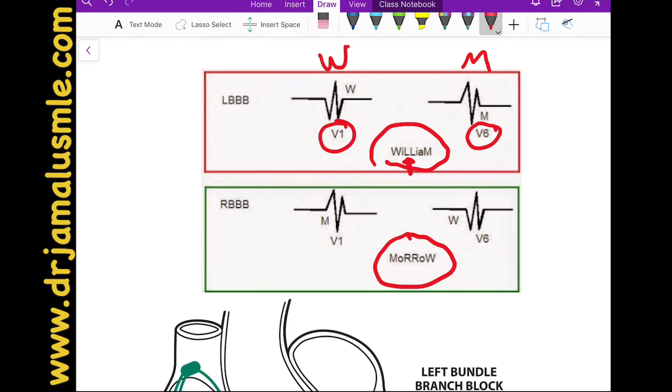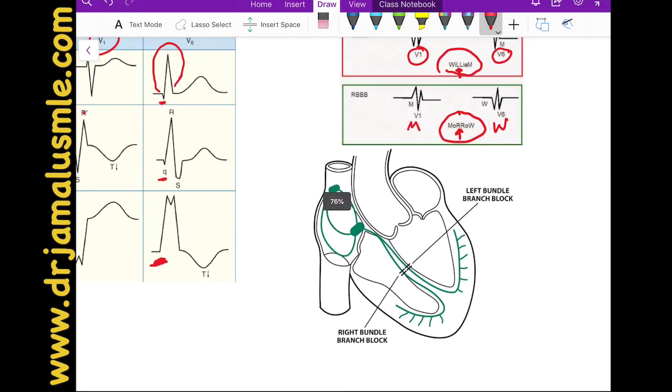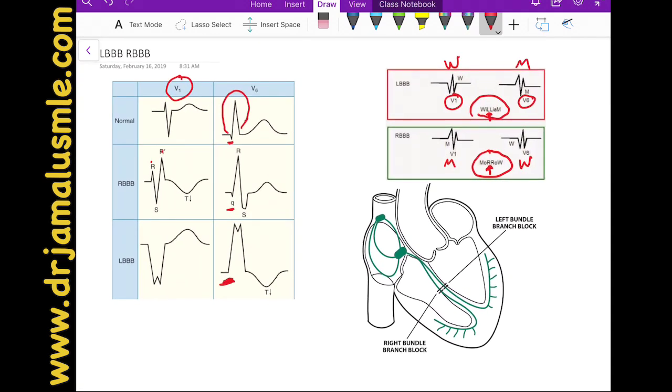Morrow, you will see M in V1 and a W in V6 in right bundle. This is just a mnemonic to remind you about those, but I do not recommend you use this, because sometimes it does not look like that for most of the times.